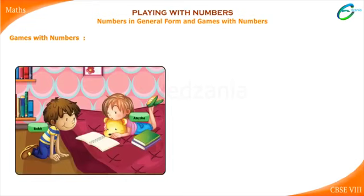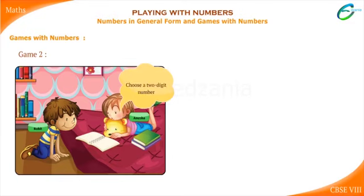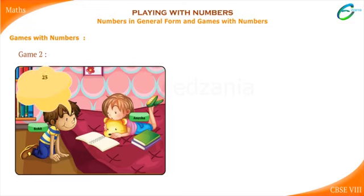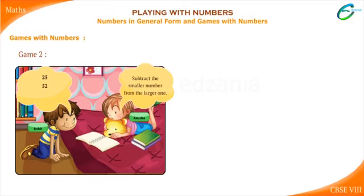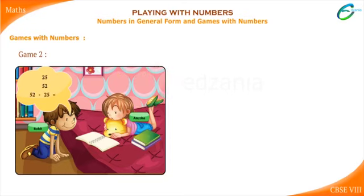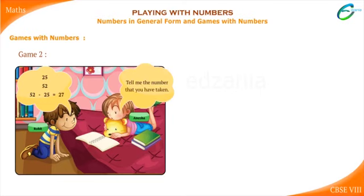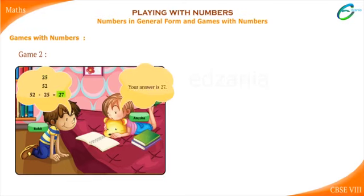Rohit is surprised and wants to play one more time. Anusha: Choose a two-digit number. Rohit: All right — twenty-five. Anusha: Reverse the digits to get the new number. Rohit: Fifty-two. Anusha: Subtract the smaller number from the larger one — in the last game we added, but in this game you subtract. Rohit: Fifty-two minus twenty-five equals twenty-seven. Anusha: Tell me the number you've taken. Rohit: Twenty-five. Anusha: Your answer is twenty-seven.